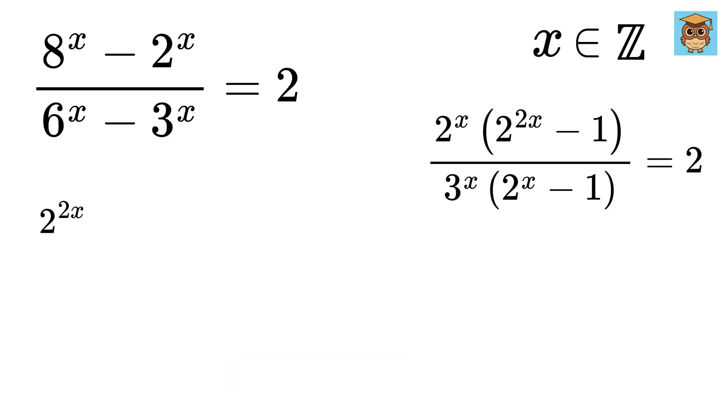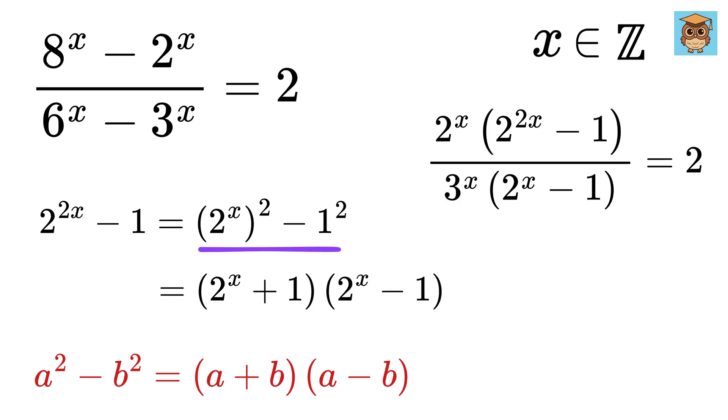Now, this 2 to the 2x can also be written as 2 to the x whole square and 1 can be written as 1 square. So it will be of the form a square minus b square, which we all know is a plus b times a minus b. Thus, it will become 2 to the power of x plus 1 times 2 to the power of x minus 1.